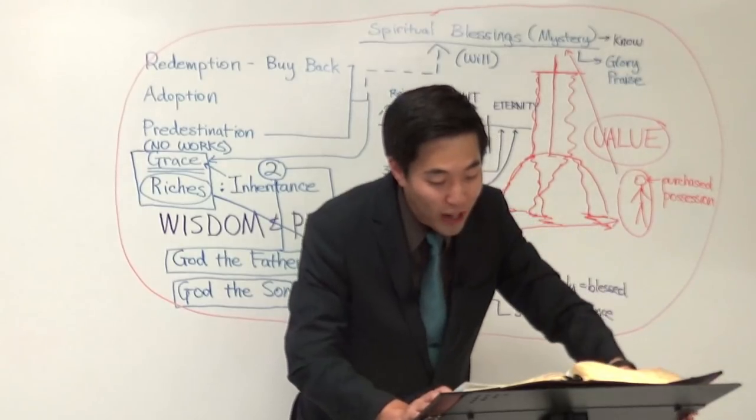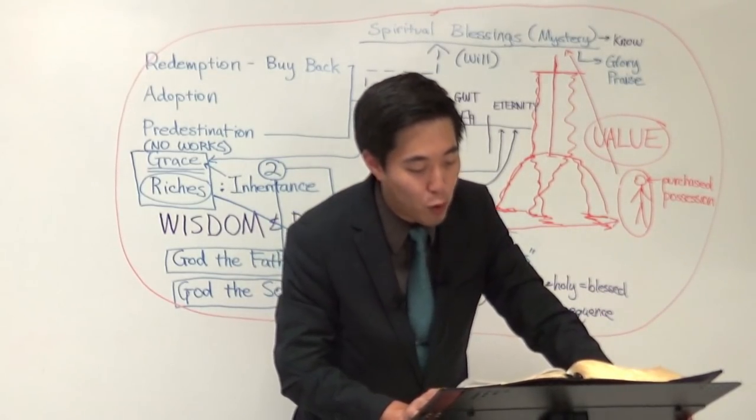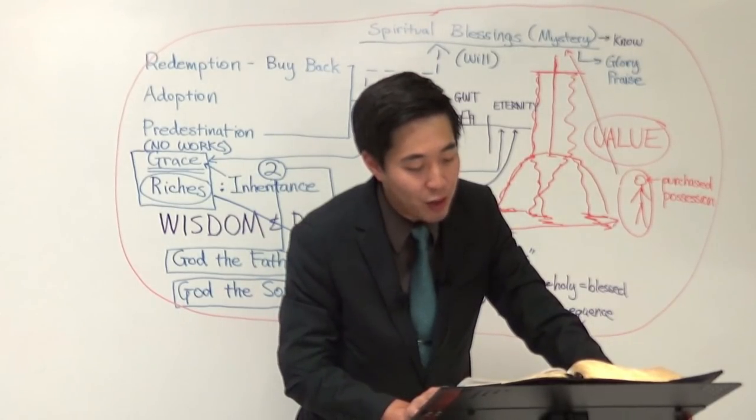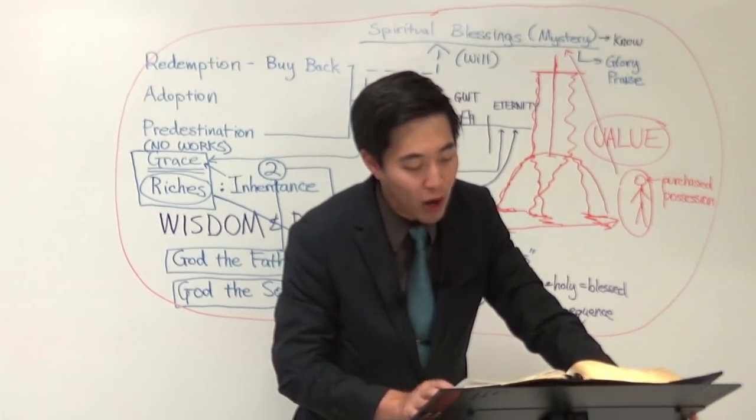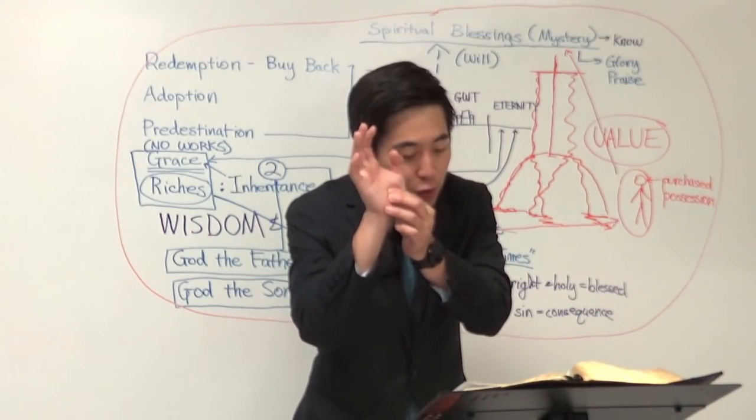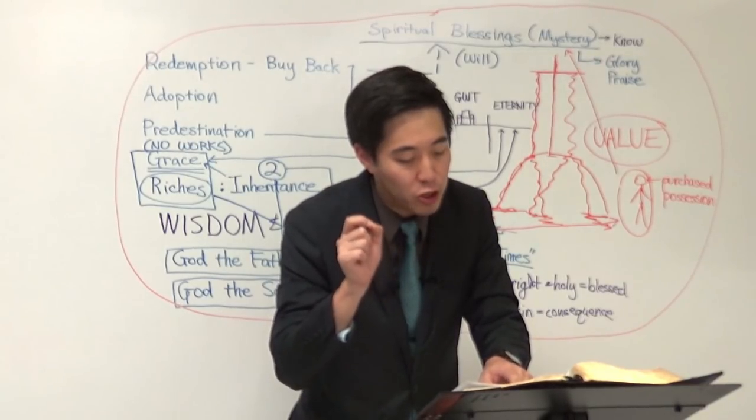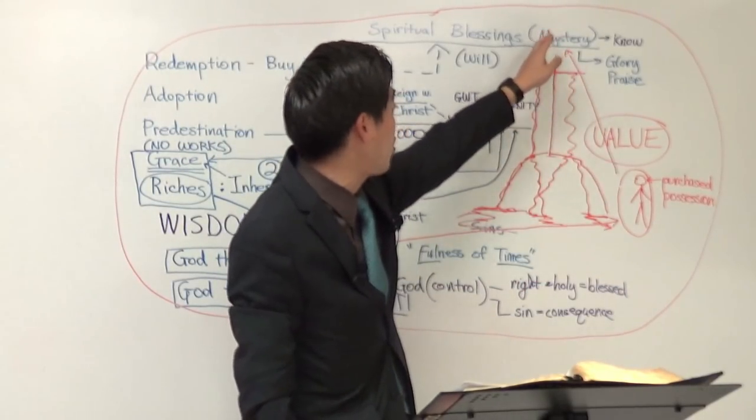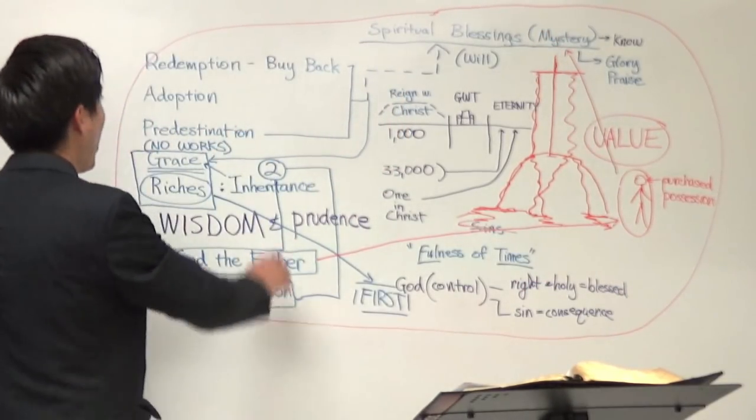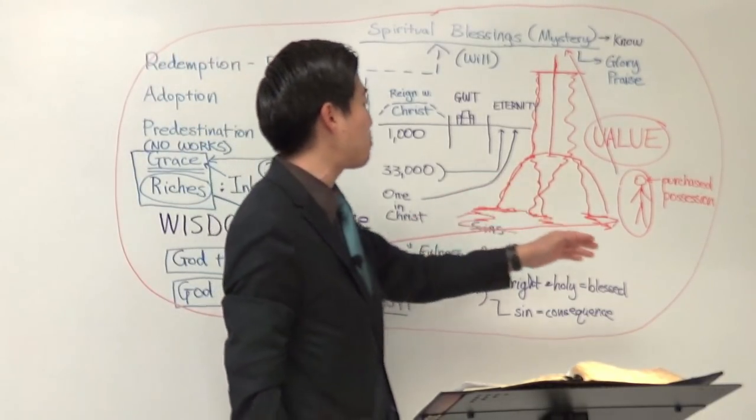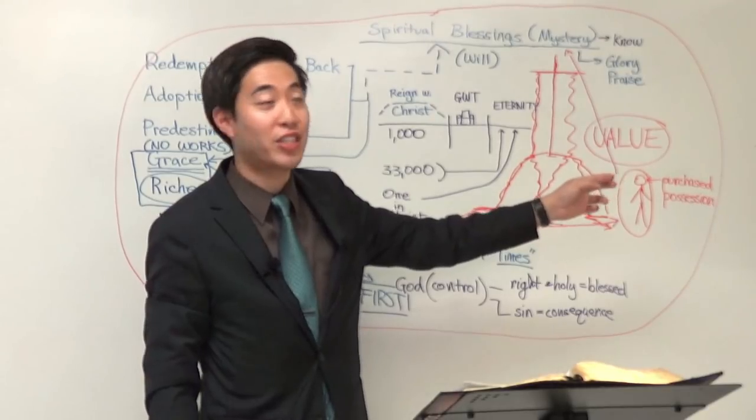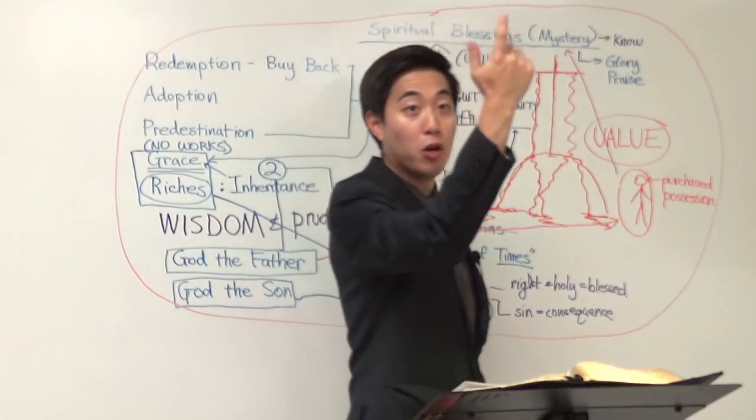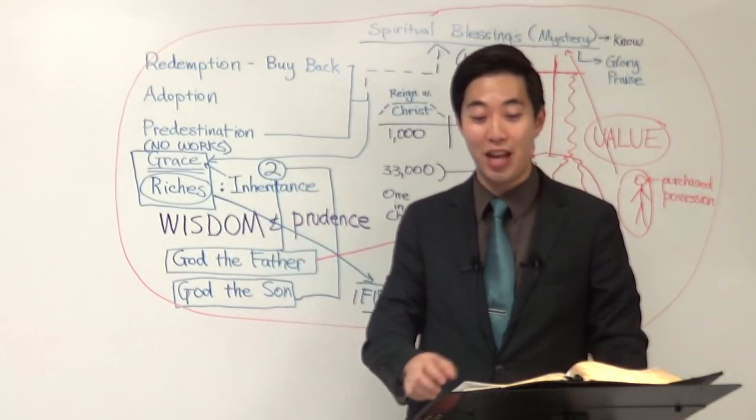Keep reading verse 23. He's going to make it more specific. And not only they, but ourselves also, which have the firstfruits of the Spirit, even we ourselves groan within ourselves, right? Because we're stuck in this bondage of corruption. We groan. Waiting for the adoption to wit the redemption of our body. See, that's the next redemption over here. So right over here, Jesus Christ redeemed you through His blood and saved your soul. Gave you forgiveness of sins. But the redemption just keeps going on. It includes this wicked flesh of yours. Jesus Christ is still in the selling business. And it still has value.